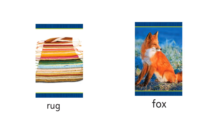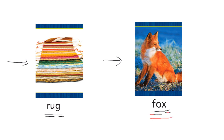These two pictures as well do not have the sound A in them. Look at the first one — this is a rug. Rug. R-U-G. And the second picture is a fox. Fox. F-O-X. Both pictures do not have the sound A in them.